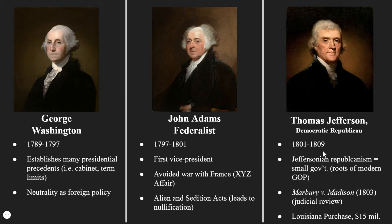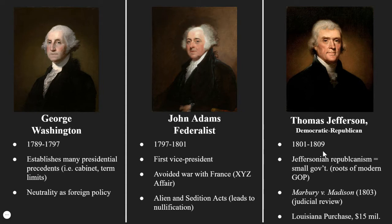With John Adams, he would be the first that we would say has a political party — he was a Federalist. He served from 1797 to 1801. He was the first vice president, serving under George Washington. As president, he avoids a war with France. However, he is also the president under whom the Alien and Sedition Acts are signed — make yourself a note. That's going to lead to this crisis we refer to as nullification, which southern states will later use to argue they can nullify portions of the Constitution and retain states' rights.